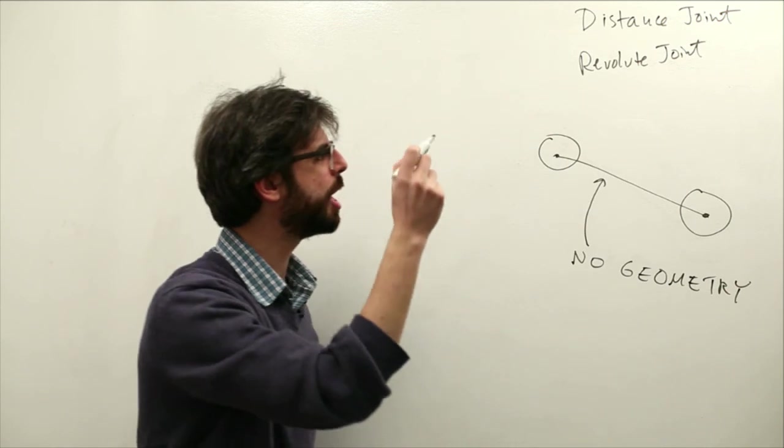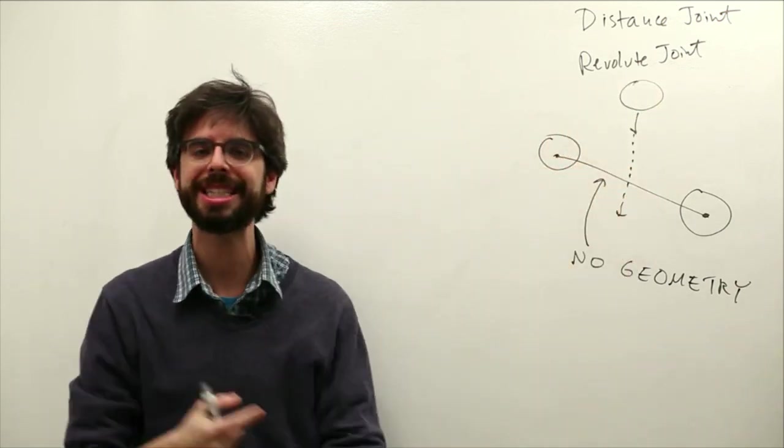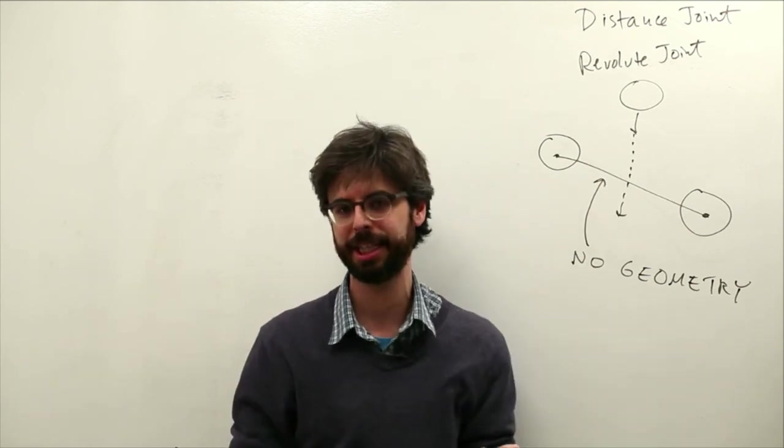Meaning if something else were falling it would pass right through that. A joint is simply a force, this distance joint is simply a force that's going to connect these two.